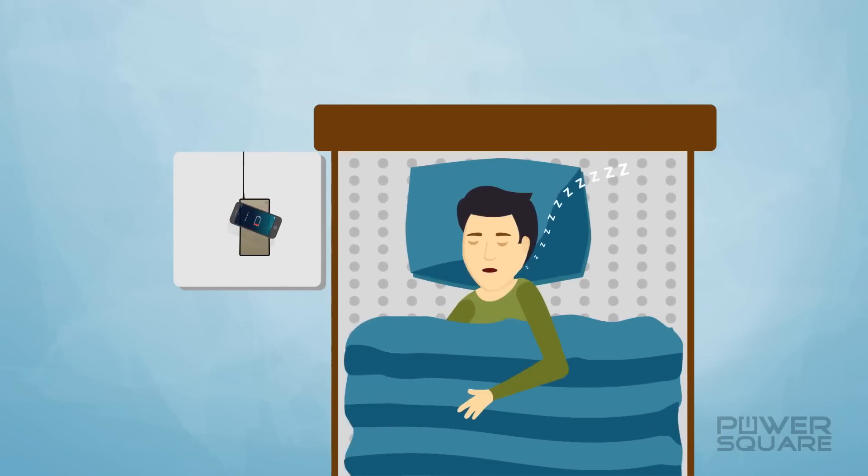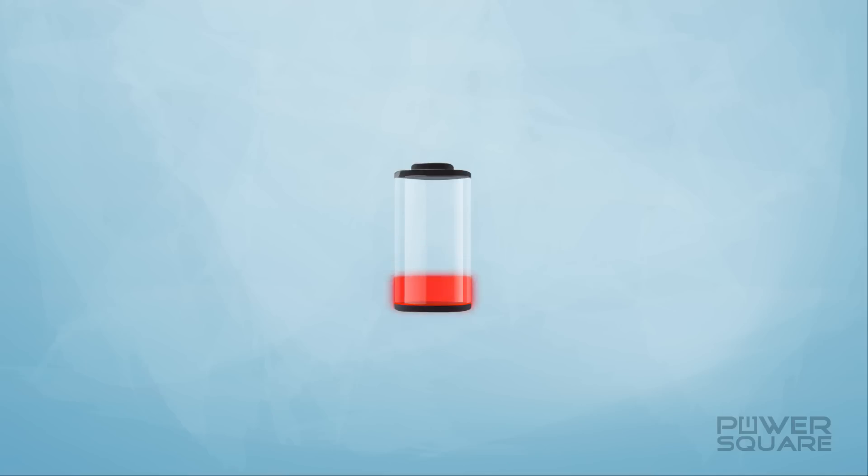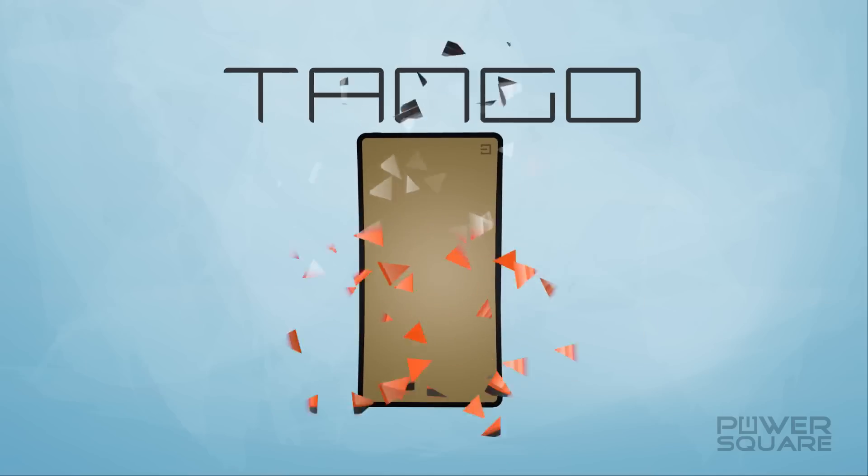You don't even have to worry about perfectly aligning your device on the sweet spot, unlike other wireless chargers. Just leave it anywhere on the pad and you still have a fully charged phone. We understand that mobile phone or tablet batteries shouldn't interrupt your life. With Tango, we've got you covered.